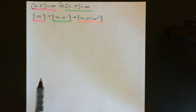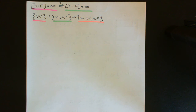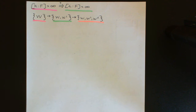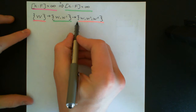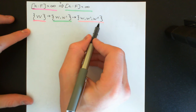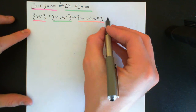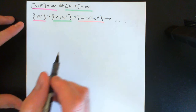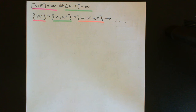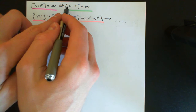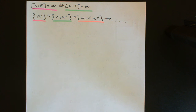So I can continue making arbitrarily large sets of linearly independent vectors in the intermediate field K viewed as a vector space over F. Now, these arbitrarily large linearly independent sets of vectors are all still going to be linearly independent when we think of L as a vector space over F, because these vectors are all still elements of the larger vector space L.